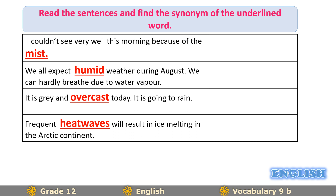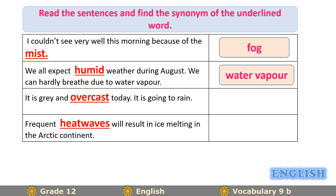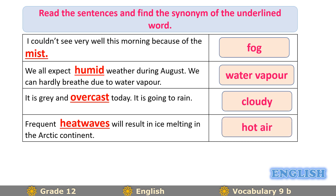The first: 'I couldn't see very well this morning because of the mist' — mist means fog. Second: 'We all expect humid weather during August; we can hardly breathe due to water vapor' — humid means water vapor, i.e., hot and wet at the same time. Third: 'It's gray and overcast today, it's going to rain' — overcast means cloudy. Last: 'Frequent heat waves will result in ice melting in the Arctic continent' — heat waves is the equivalent of hot air.